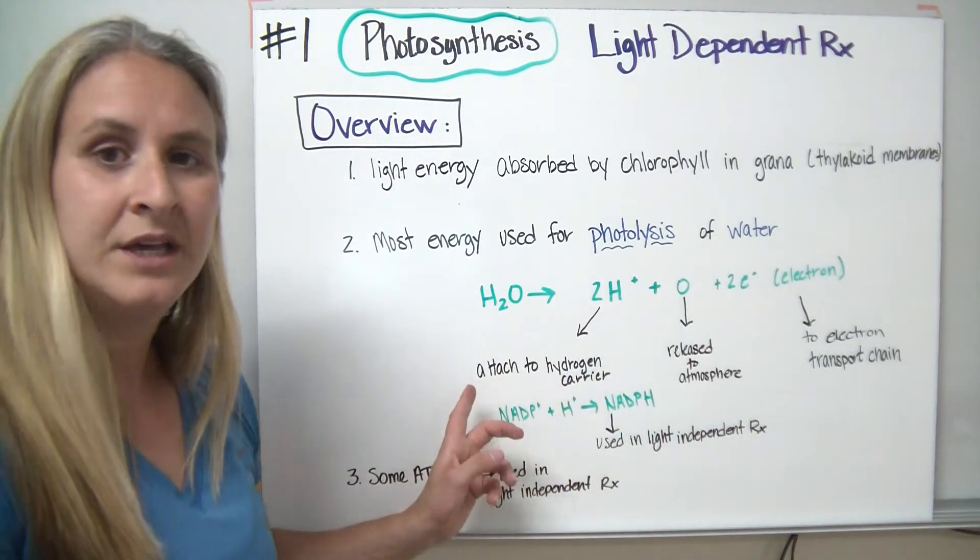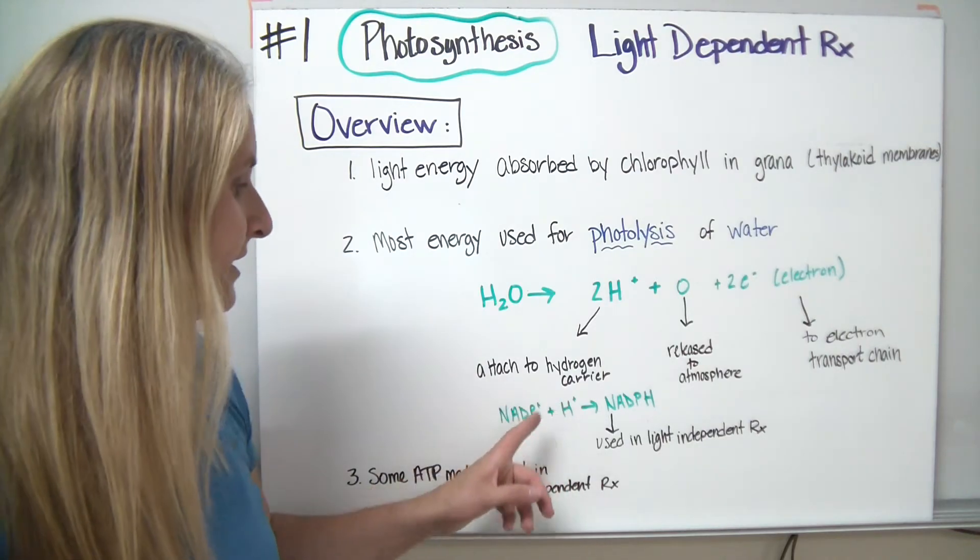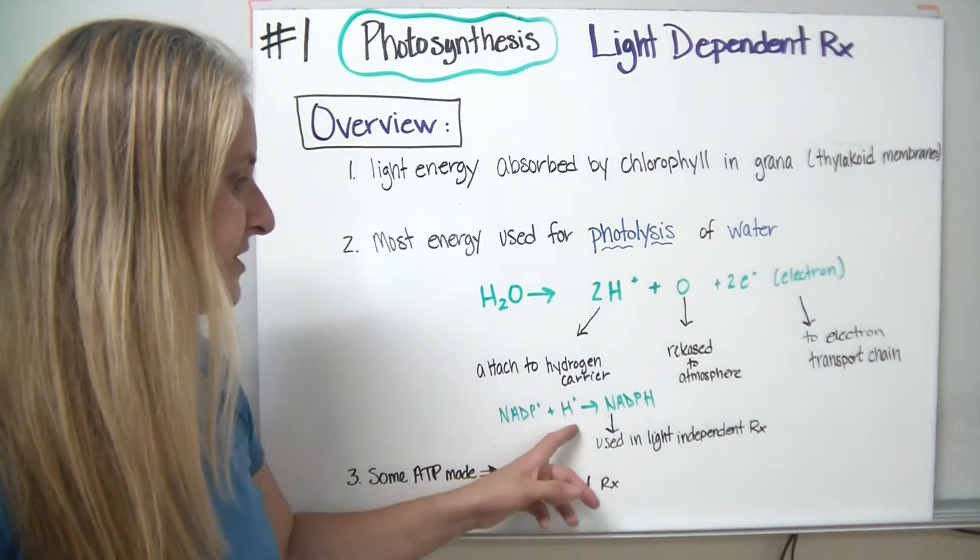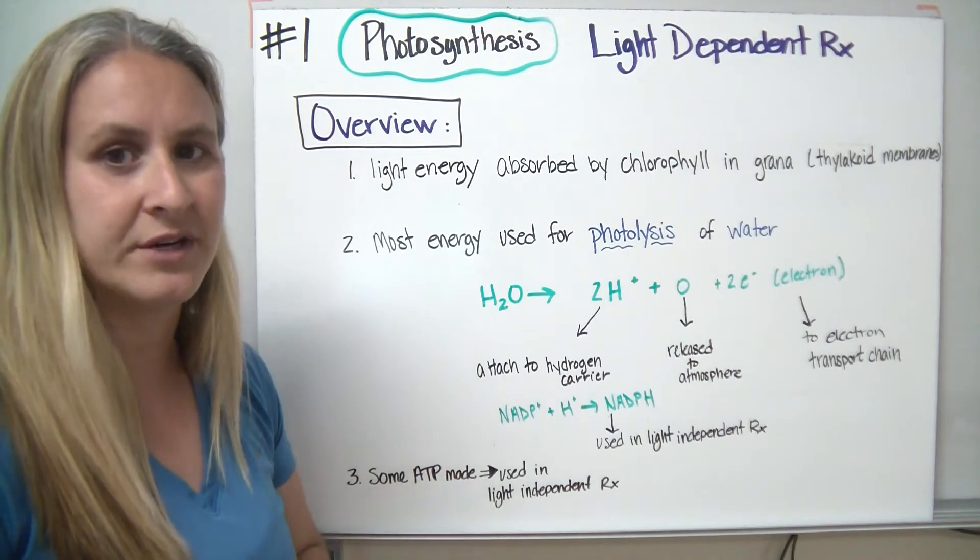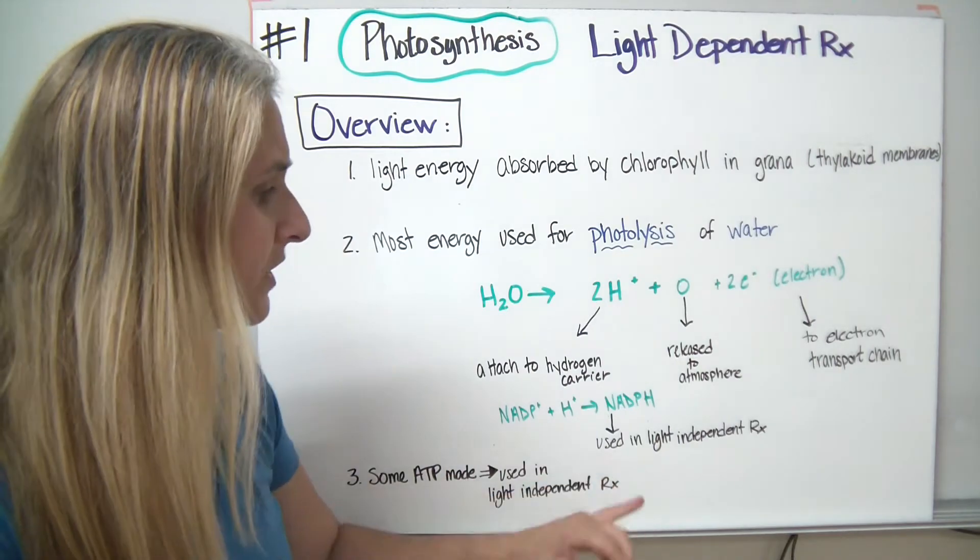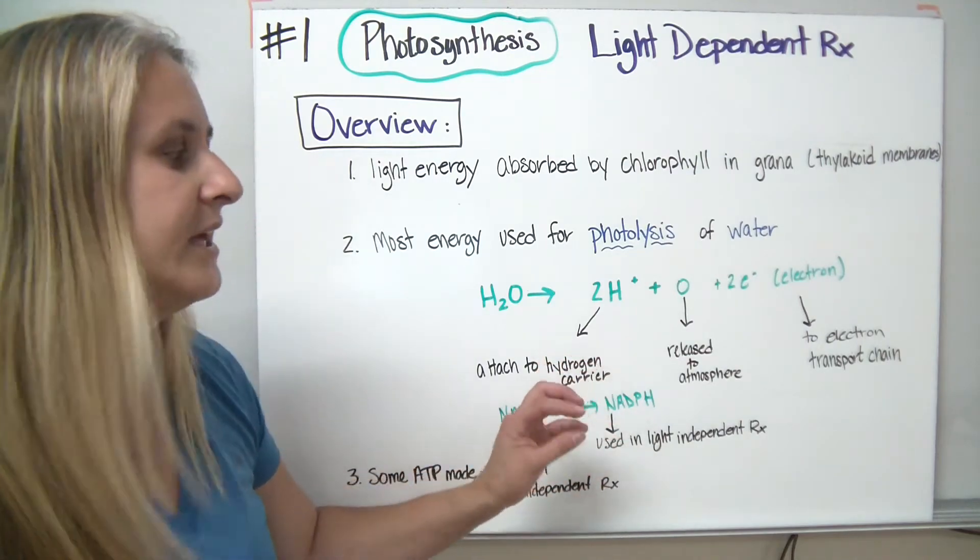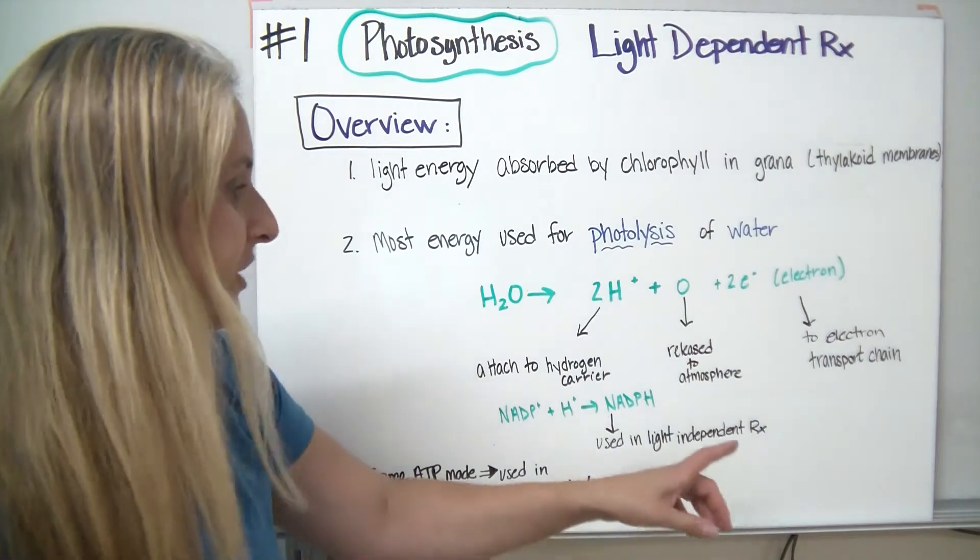So going back to our hydrogens, the hydrogens are going to attach to what's called a hydrogen carrier. And in this case, it's our NADP plus molecule. When the hydrogen is attached to it, it turns into NADPH. Hydrogens are really going to represent our energy in this case, and this is going to be used in our light-independent reactions. They're just going to carry the hydrogens around to create a gradient to help us transfer energy.